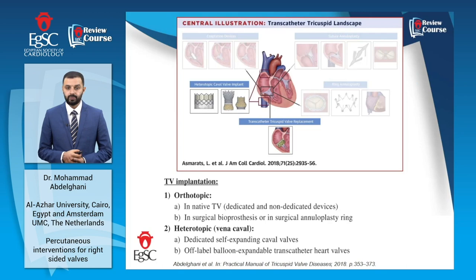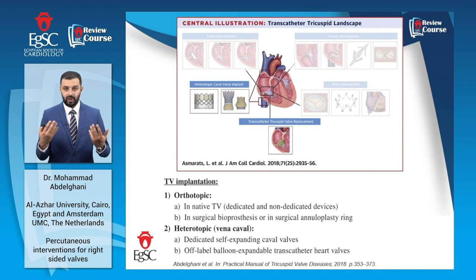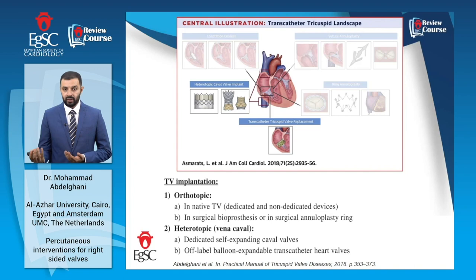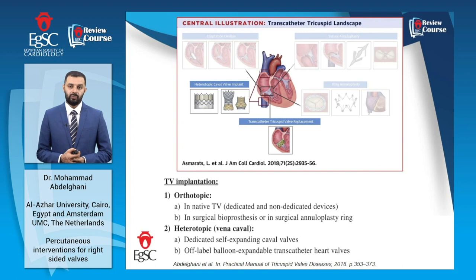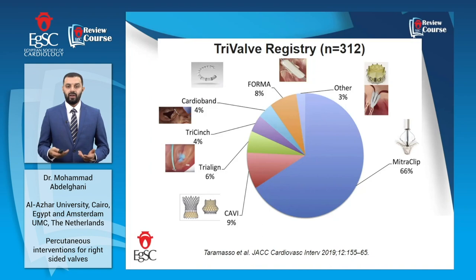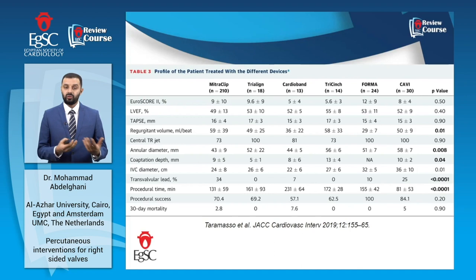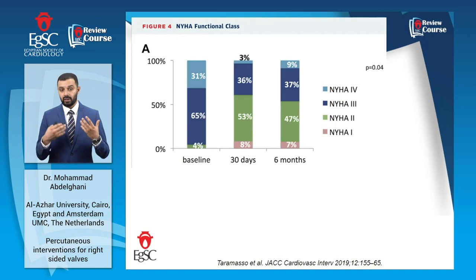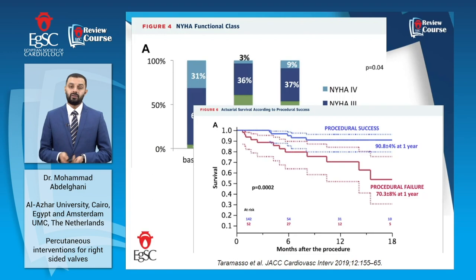For a quick overview of the options in the transcatheter tricuspid landscape: starting with tricuspid valve implantation, we have orthotopic transcatheter tricuspid valve implantation — meaning implantation of a device into the normal tricuspid valve position — and heterotopic valve implantation, which aims at reduction of systemic venous congestion. Repair techniques can be broadly classified into annular remodeling or coaptation techniques. In the TriValve registry, which included 312 patients who underwent some form of transcatheter intervention for TR, the MitraClip in the tricuspid position was the most commonly used. Regardless of the technique used, TR improved significantly at 30 days, and this improvement translated into functional improvement in NYHA functional class and mortality reduction in patients with a successful procedure.